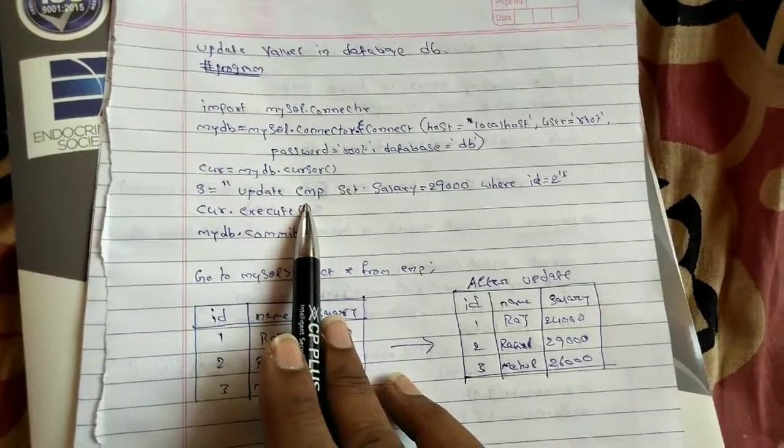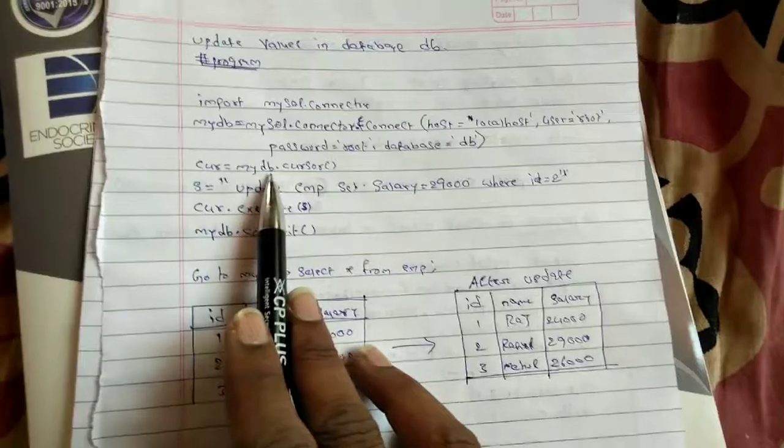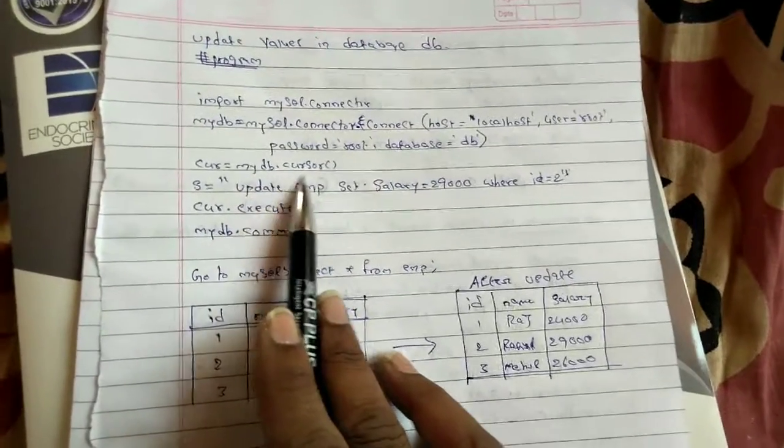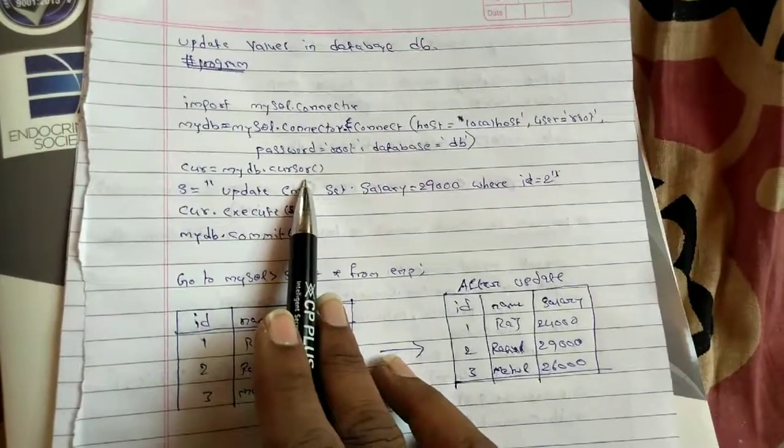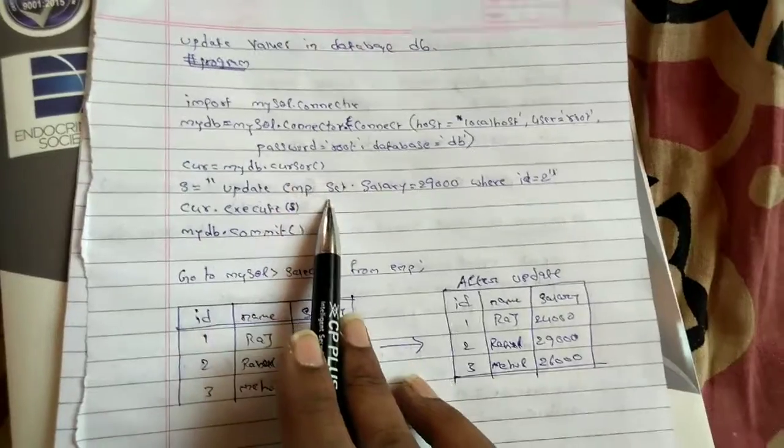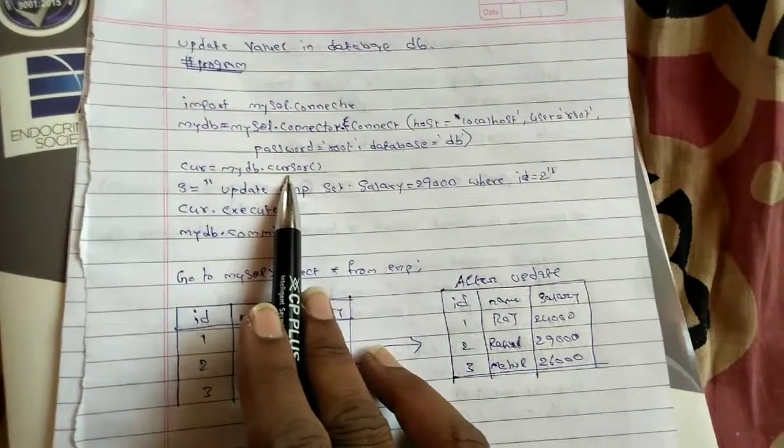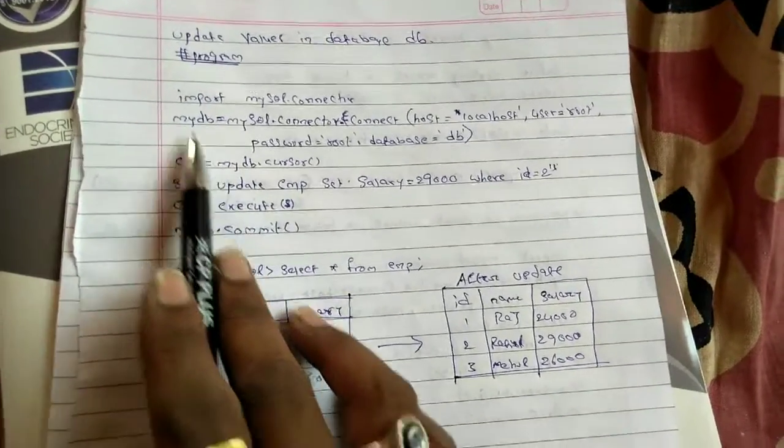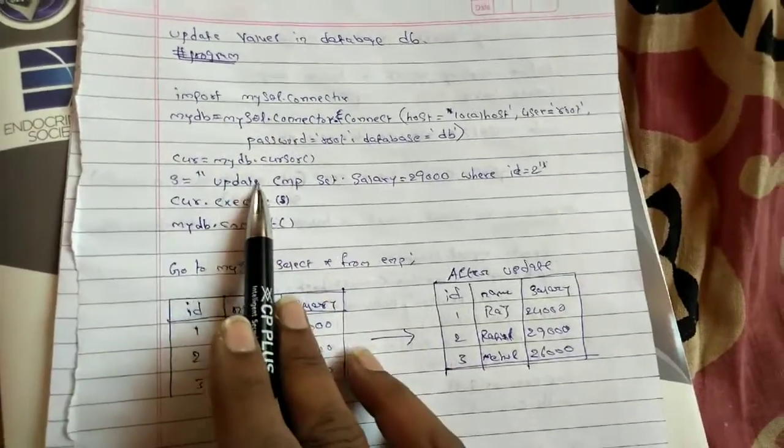Let's see this update query. Before that, mydb - whatever cursor I am going to perform, whatever query I am going to execute, that will be implemented on mydb, that is the database. So all this connection will be in mydb.